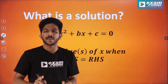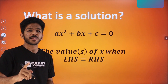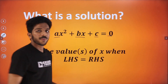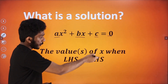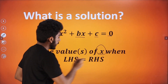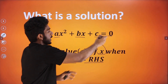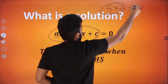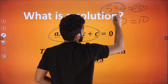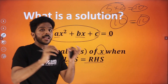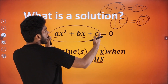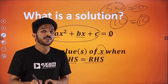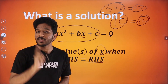The first question is: what is the solution, or find x, or find the solution for this equation. The value or values of x, when LHS is equal to RHS. This x squared plus bx plus c — the value of x is the solution for the equation.